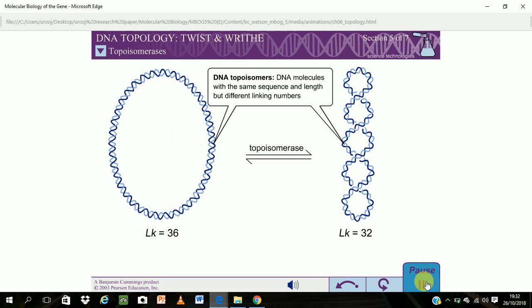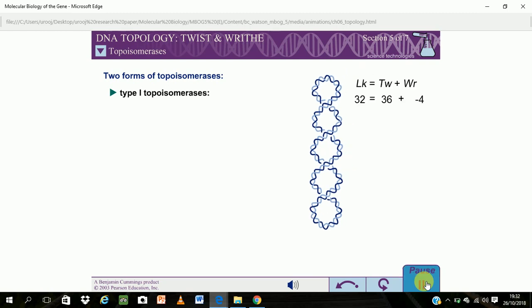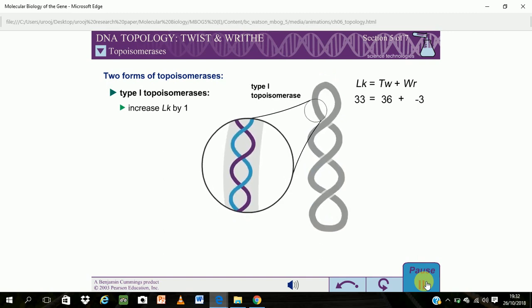Topoisomerases are enzymes that change the linking number of a DNA molecule. There are two types of topoisomerases. Type 1 topoisomerases increase linking numbers in steps of 1. By introducing an additional twist, type 1 topoisomerases relax negative supercoils.